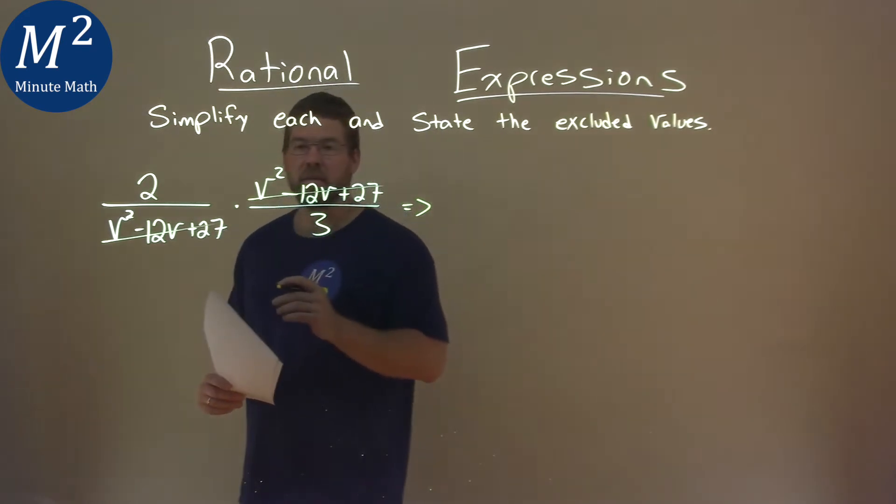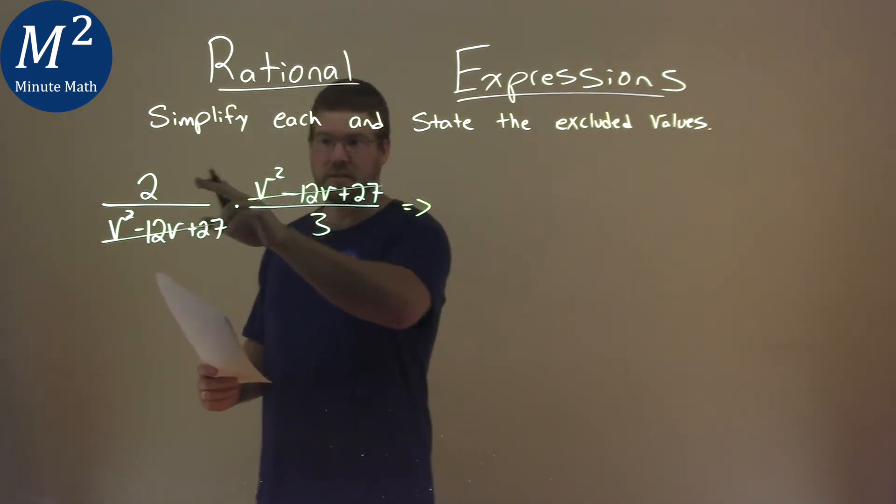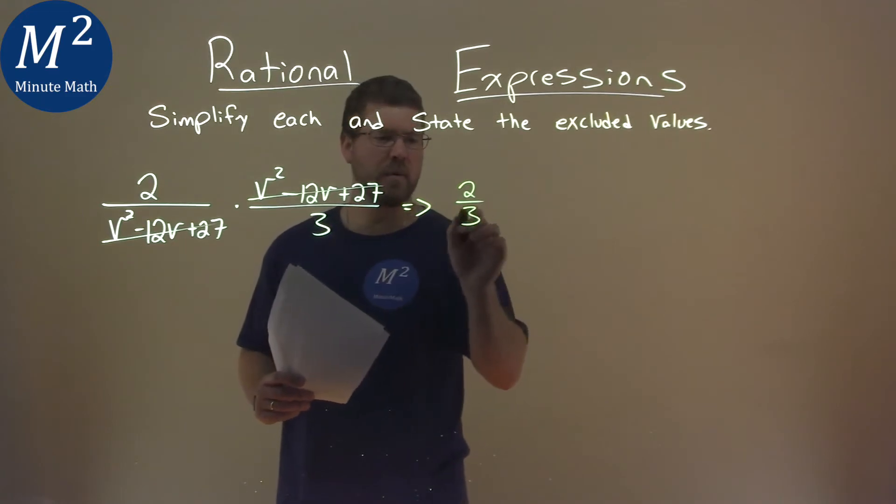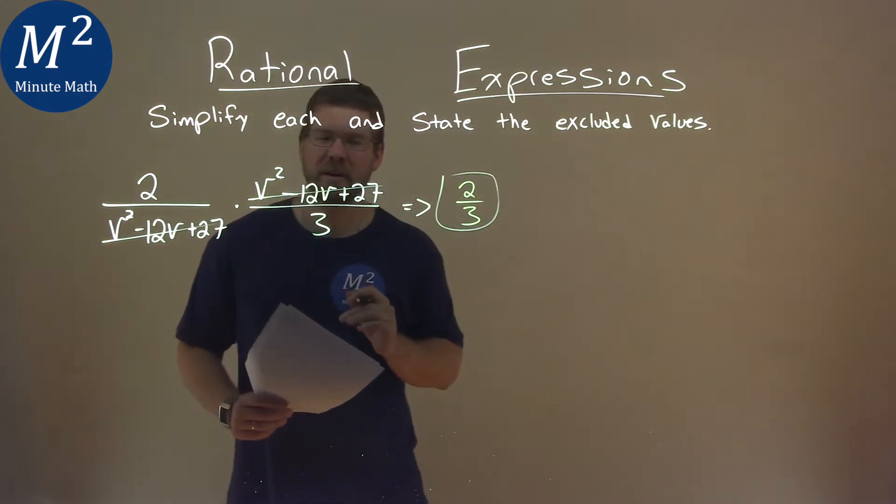And so when simplifying this, our simplified expression is just a 2 in the numerator and a 3 in the denominator. All of that very easily just becomes 2 thirds.